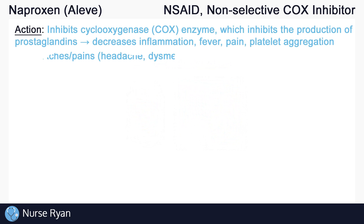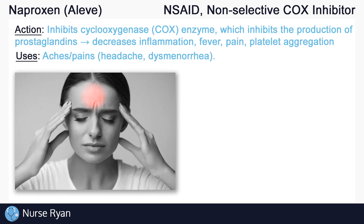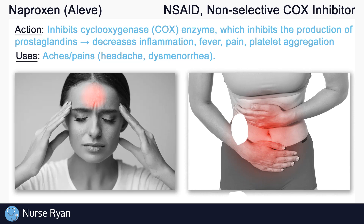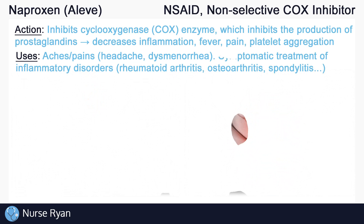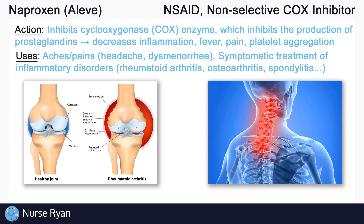Naproxen is commonly used in the management of various mild to moderate aches and pains, like headaches, dysmenorrhea, and many more. It is also used in the symptomatic treatment of some inflammatory disorders, such as rheumatoid arthritis, osteoarthritis, spondylitis, and more.